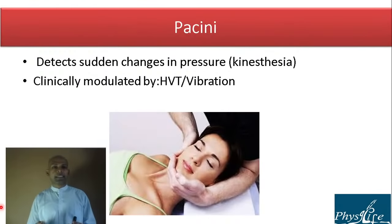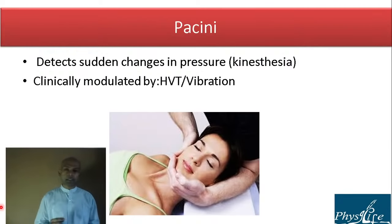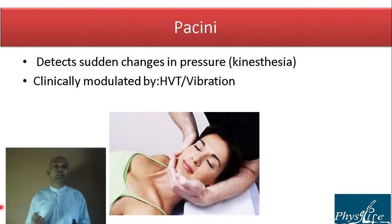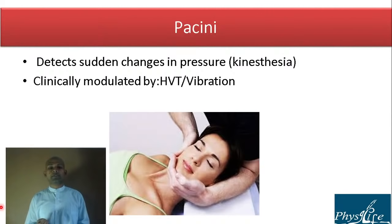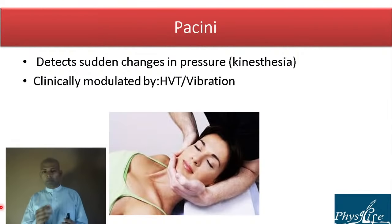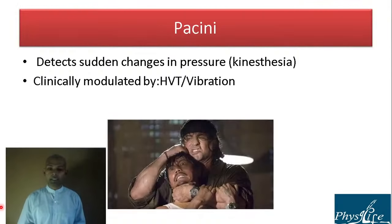The Pacinian corpuscle detects sudden changes in pressure and kinesthesia, and travels via the dorsal column. It is clinically modulated by high-velocity thrust and vibration — if you feel relaxed by vibration, it's the Pacinian. A single thrust resets the receptors — like how a defibrillator resets the rhythm of the heart, Pacinian corpuscle stimulation can reset the length-tension relationship. The problem with high-velocity thrust is it requires a lot of skill.